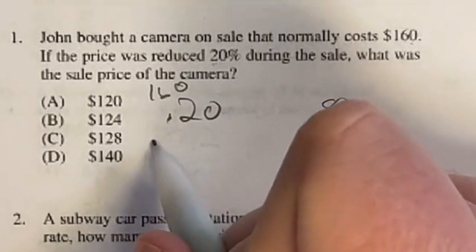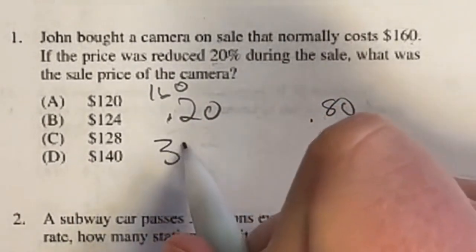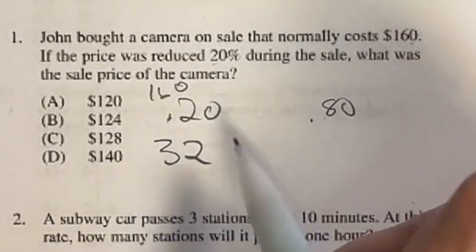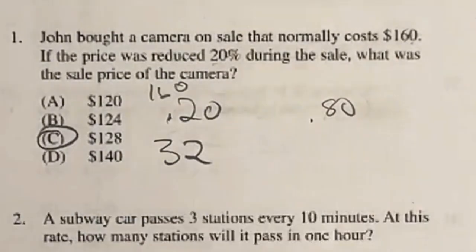2 times 16 is going to give me 32. And in that case, I can subtract the 32 from the 160, and that's going to give me 128, which is answer C.